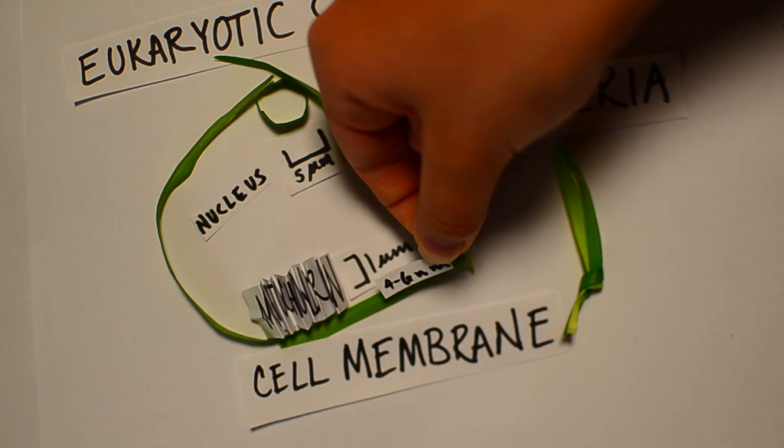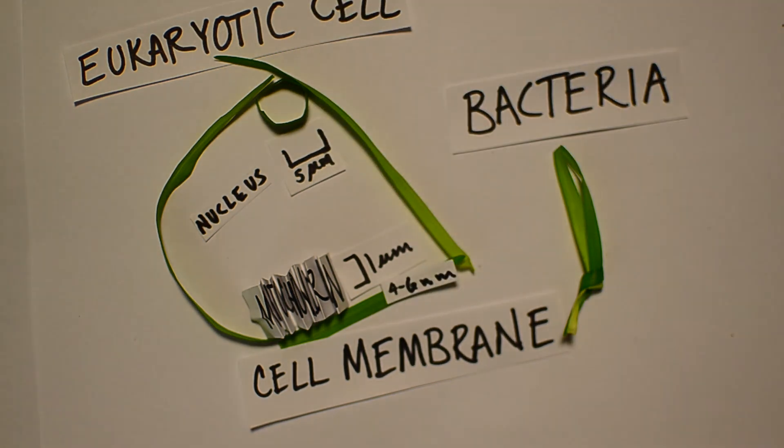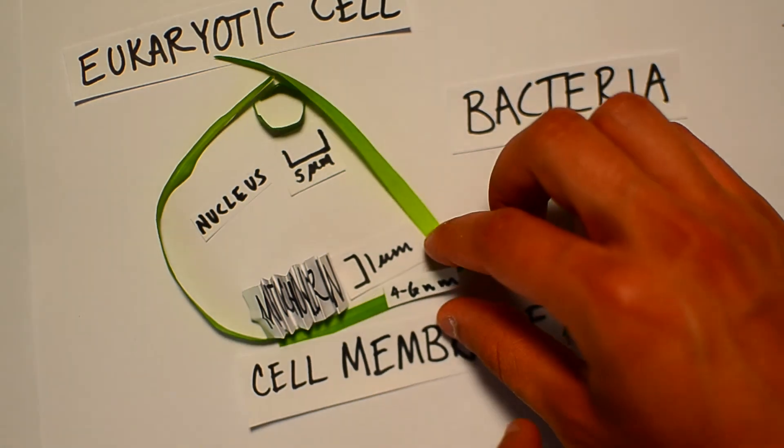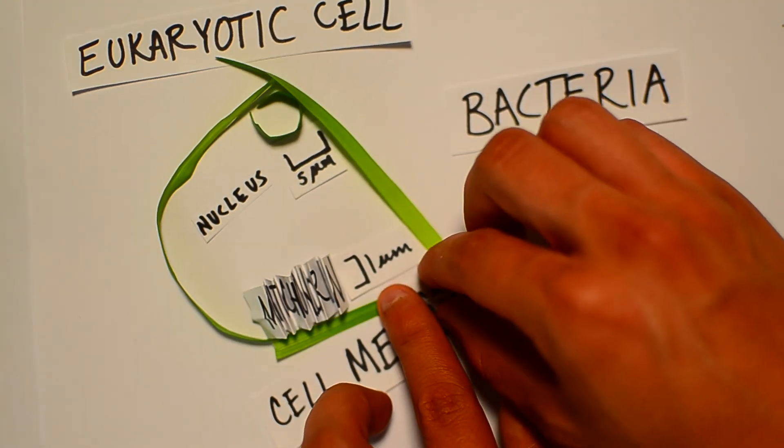Now let's look at that cell membrane. It controls what goes in and out of the cell. Really important, right? Well, it's about 4 to 6 nanometers wide.